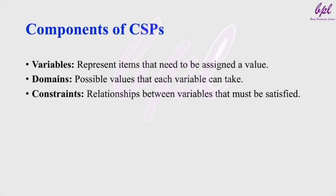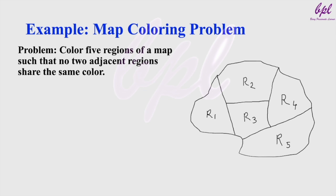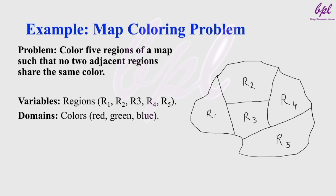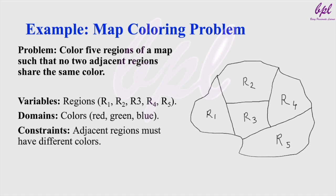An example of a CSP is the map coloring problem with five regions, where the goal is to assign one of three colors — red, green, or blue — to each region. The variables represent the regions R1, R2, R3, R4, and R5, and the domain consists of three colors: red, green, and blue. The constraint is that no two adjacent regions can share the same color. For instance, if region R1 is red, region R2, which is adjacent, must be either green or blue.